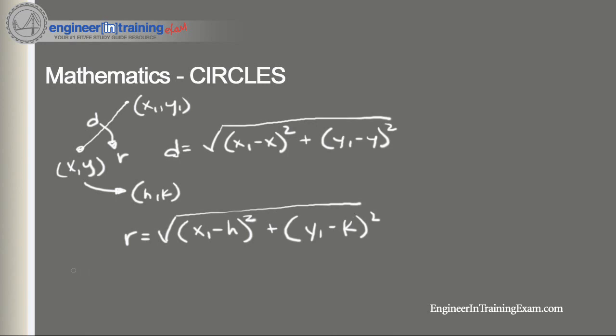So r squared is equal to (x minus h) squared plus (y minus k) squared. So this right here is going to be our standard form equation for a circle.